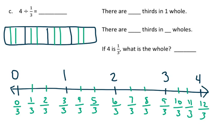So we're going to fill in our blanks in our questions here, and it says there are blank thirds in one whole. Well, if I'm looking at one whole, which is right here, or right here, there are 3 thirds in one whole.